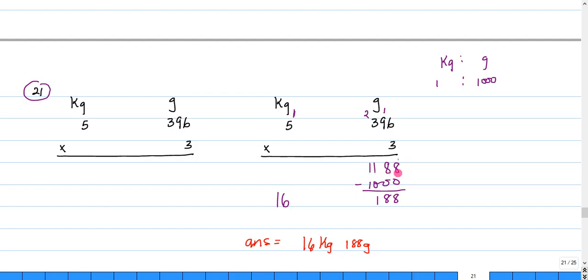Remember the ratio of kilogram to gram: for every kilogram we have a thousand grams. So we could take out a thousand from this, so 1188 minus a thousand leaves us with 188. This thousand represents one kilogram and we could add that to the kilogram side of this multiplication problem.